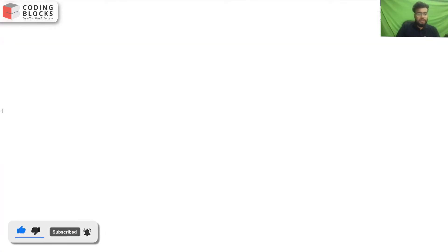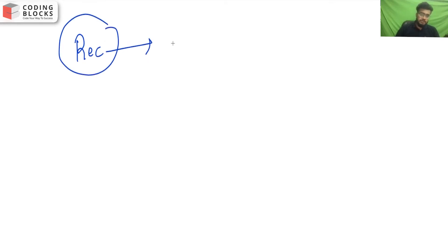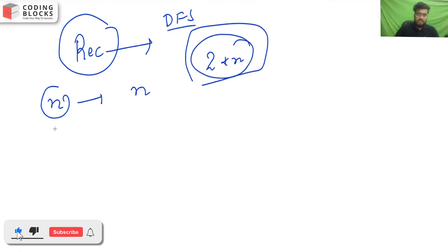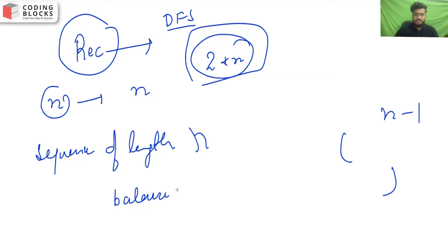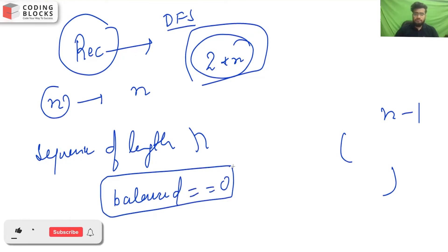To find all possible combinations, one thing that comes to mind is recursion — so let's look at the recursive approach, or DFS. In recursion, we have n and we want to generate n valid parentheses. The valid parenthesis string will be of length 2*n. To generate sequences of length 2*n, it will be a combination of n opening brackets and n closing brackets. Once all sequences are generated, a balance check will determine whether they are balanced — if the balance equals 0, we can confirm it is valid and add it to our answer.